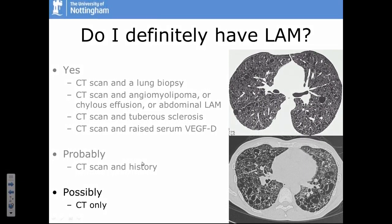If you don't have those other features or haven't had a biopsy, you probably have LAM if your scan is classical. Sometimes you have a scan that isn't completely classical — for example, another CT at the bottom looks quite similar at first glance, but the cysts aren't round, they're funny shapes, and they're not distributed evenly. This is actually a disease called Langerhans cell histiocytosis, another rare lung disease. You have to be careful to get the right diagnosis, because the treatment of Langerhans cell histiocytosis is quite different from LAM.